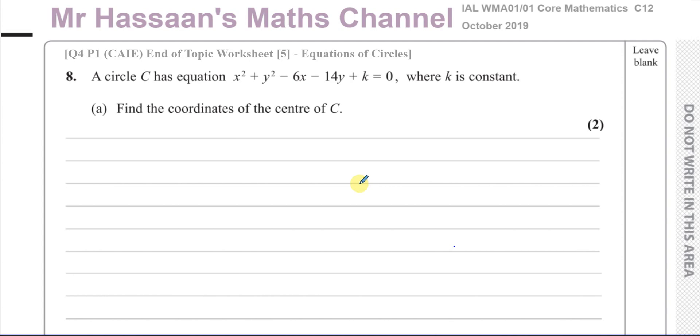Question number 8, part A: A circle has equation x² + y² - 6x - 14y + k = 0, where k is a constant. Find the coordinates of the center of C.